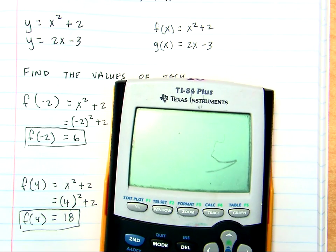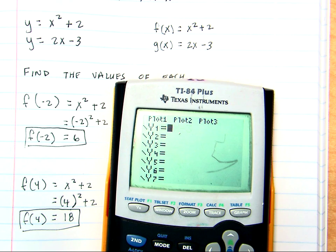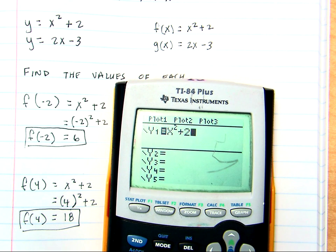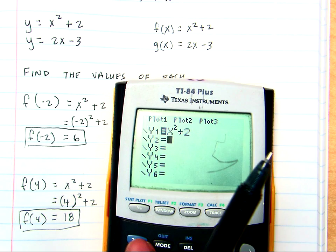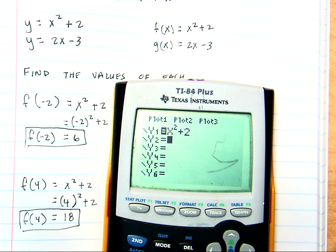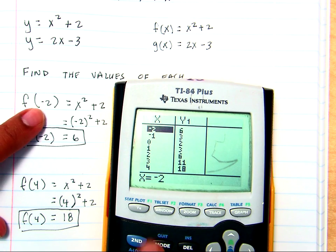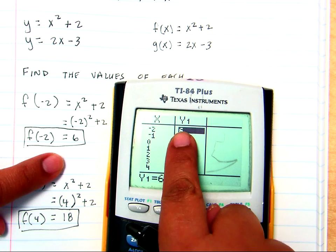So, using our calculator, I'm going to type in f of x. f of x is x squared plus 2. I'm going to go to second graph. And I'm going to look for negative 2. Negative 2 across from it is 6. That's what we got.